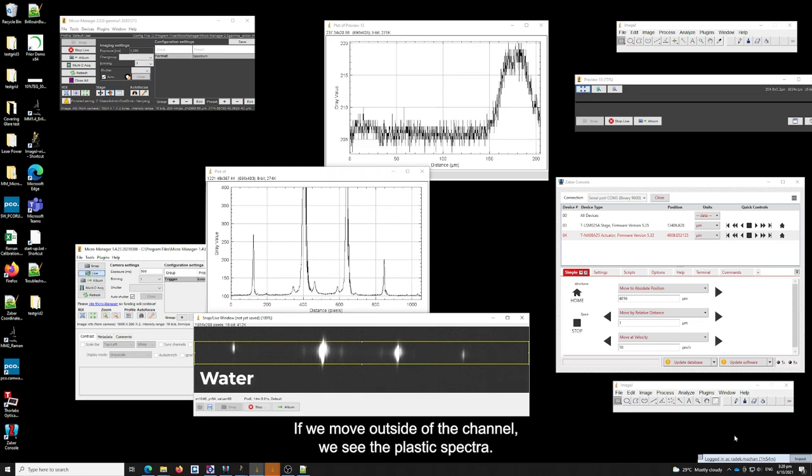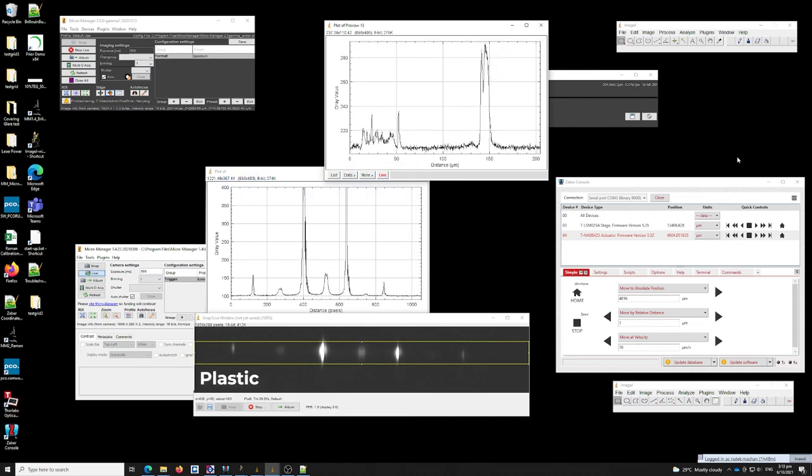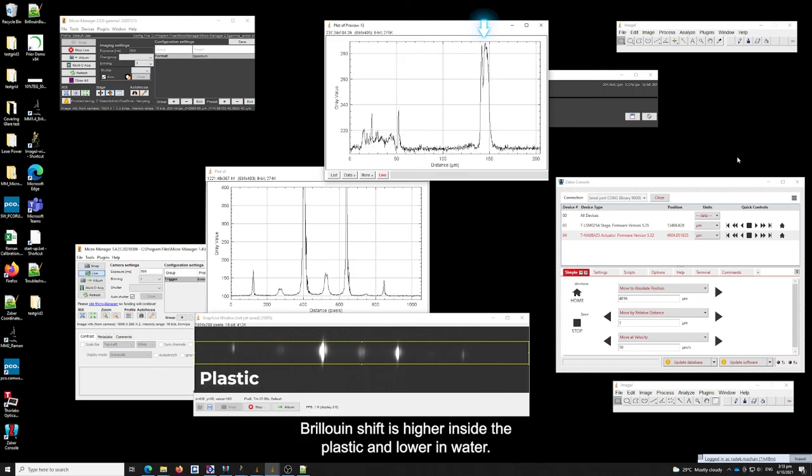If we move outside of the channel, we see the plastic spectra, Raman spectrum and Brillouin spectrum. The Raman spectrum exhibits a strong peak from stretching CH2 vibrations. Brillouin shift is higher inside the plastic and lower in water.